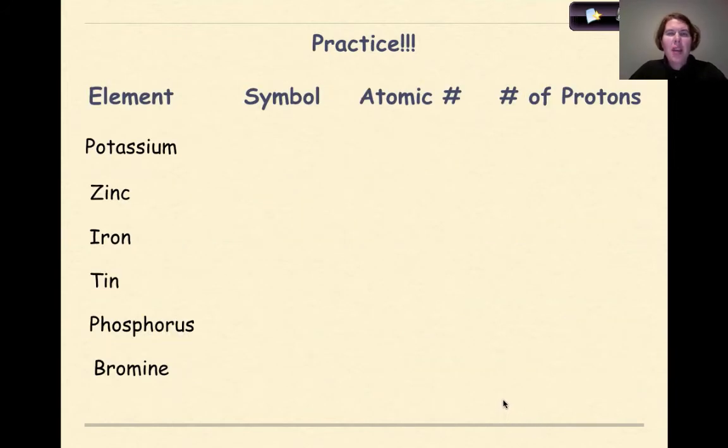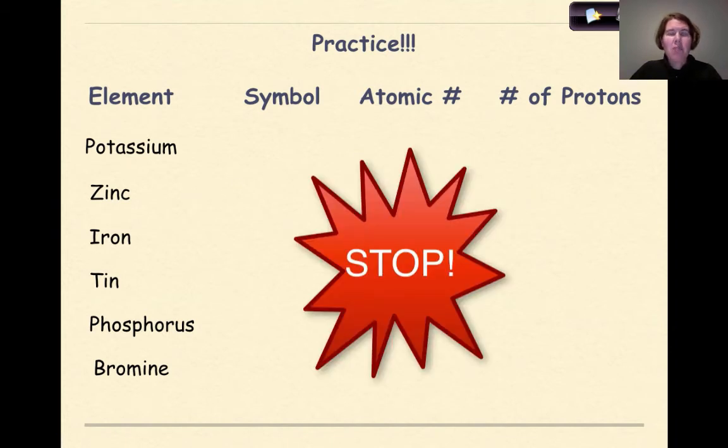So here's what I would like you to do. Either in your notes or if you're practicing on a separate sheet of paper, there are six elements right here: potassium, zinc, iron, tin, phosphorus, and bromine. What I'd like you to do is use your reference table, look up the symbol for each, find the atomic number, and figure out the number of protons for each atom of the element. So stop the video, and when you're done, start it again.